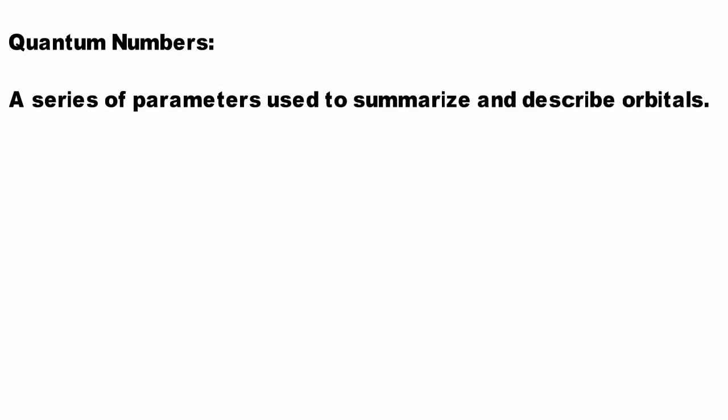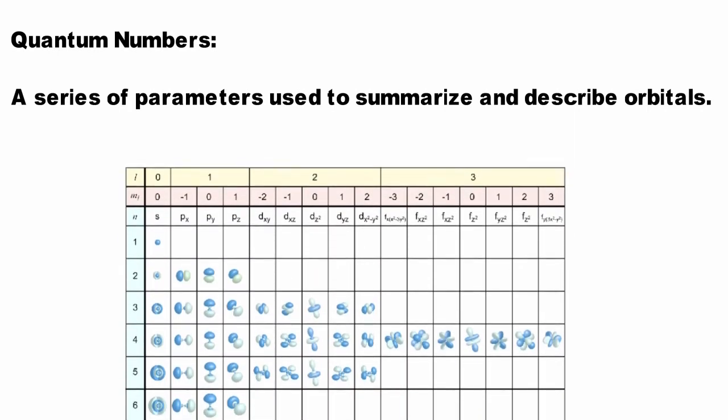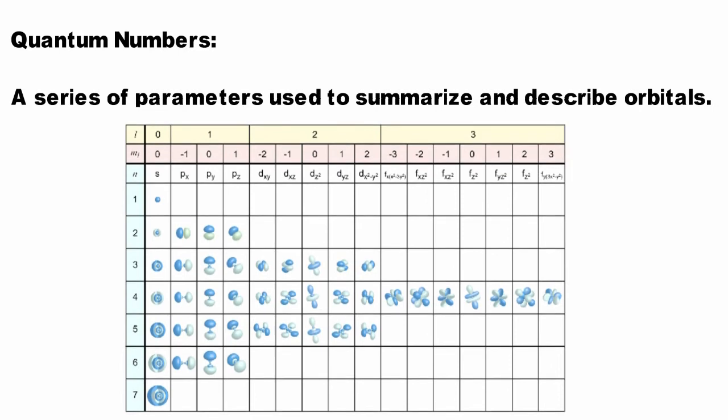So, for our purposes, each orbital can be described by a set of quantum numbers, and each quantum number has rules that define what values it can take.